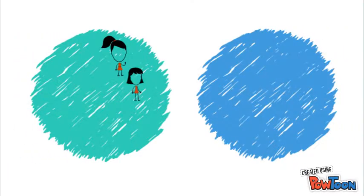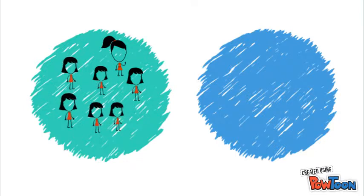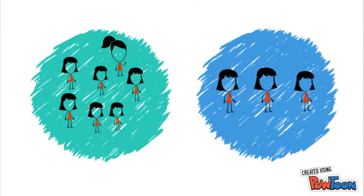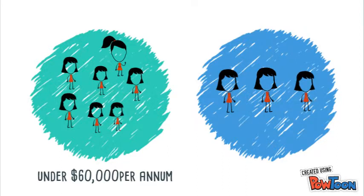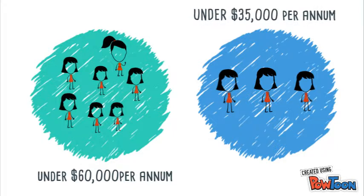Seven participants from two-parent households and three participants from single-parent households. In order to meet the eligibility criteria, two-parent households must earn under $60,000 per year and single-parent households must earn under $35,000 per year, as stated by the Australian Tax Office.